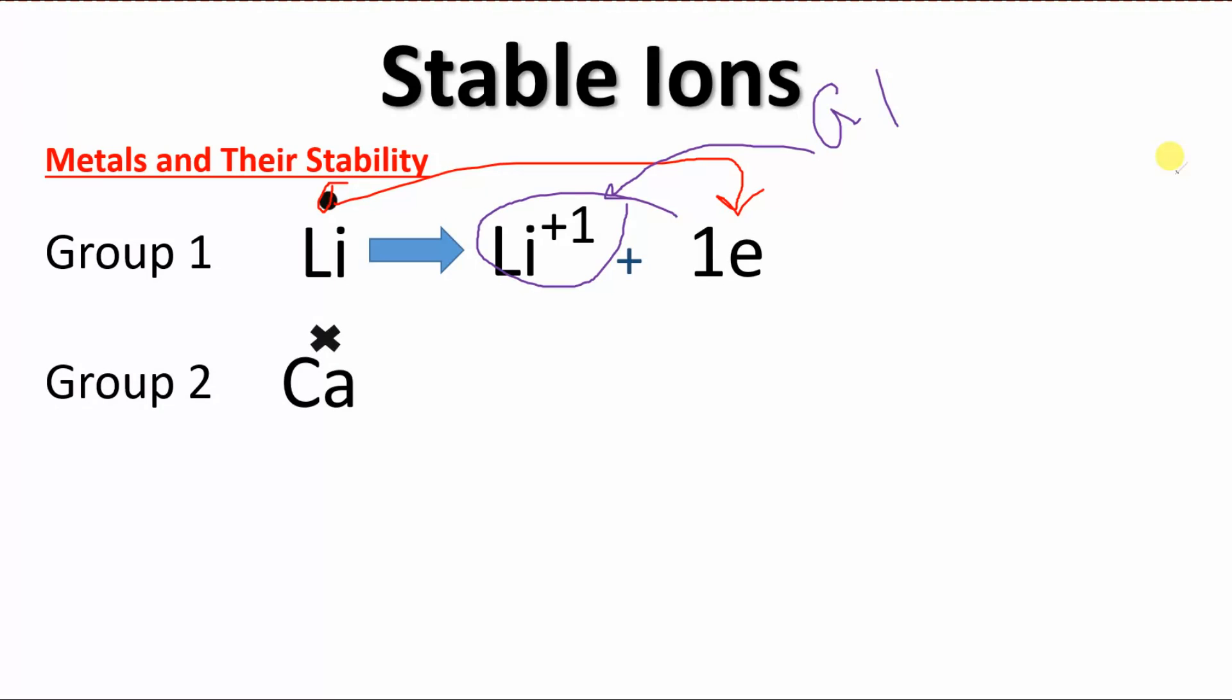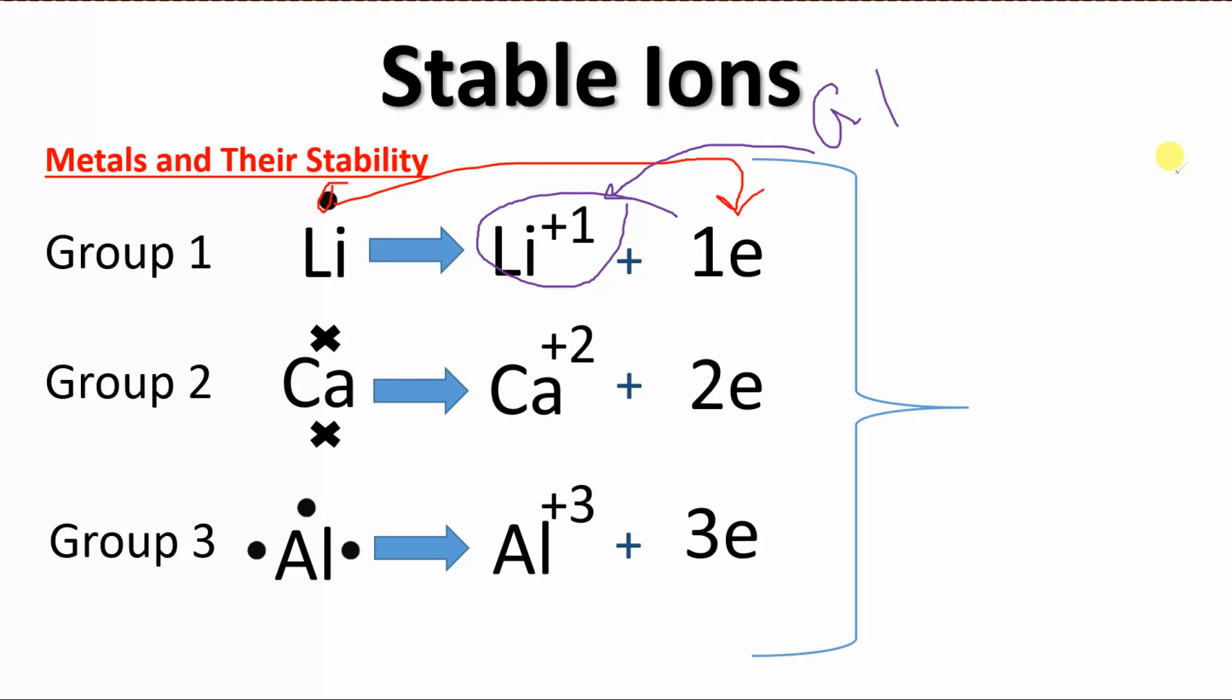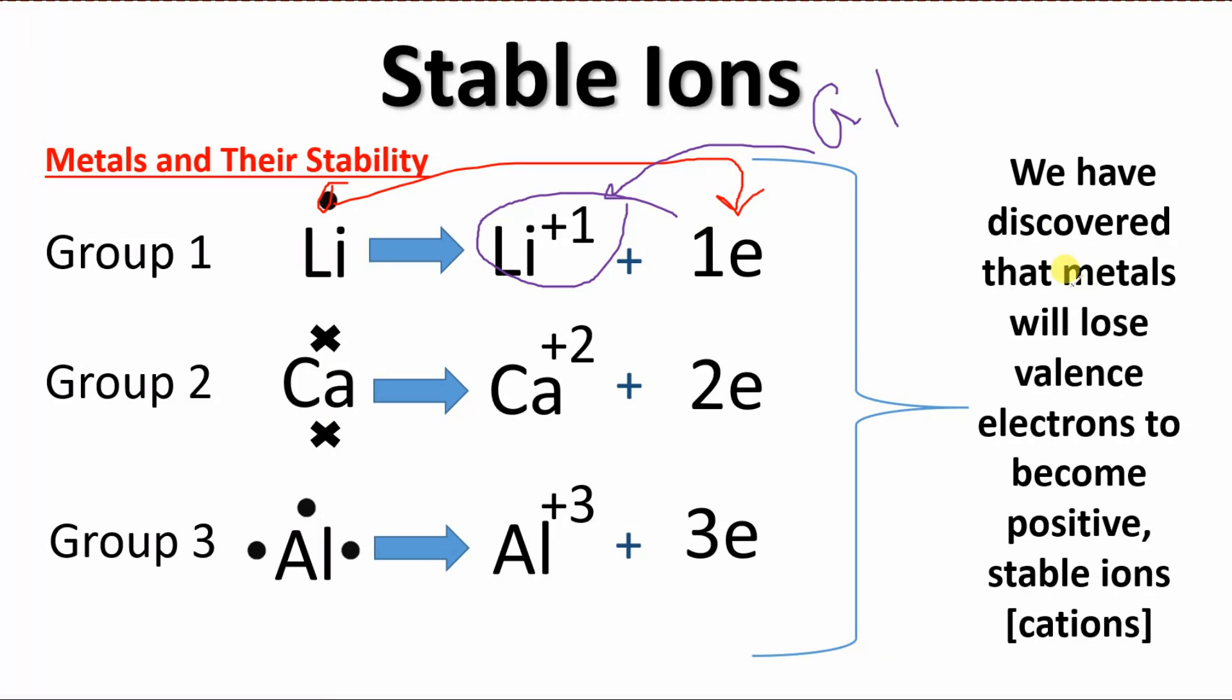When we get to group two we already looked at calcium. It's got two valence electrons. So what calcium is going to do is lose two, gain six. Well it's going to lose two. So if it loses two negatives it's going to have an overall charge of plus two. And then there are those two electrons. And group three is the last one we'll look at here—aluminum. And so you might have already jumped to the conclusion that this aluminum is going to kick those three off. It's going to have an overall charge of plus three. And we've got our three electrons. So we've actually made a discovery here because remember these are all metals. So we have discovered that metals will lose valence electrons to become positive stable ions. And the fancy name for a stable positive ion is a cation. Looks like a big T. Looks like a plus sign. That's how I remember cations are positive.